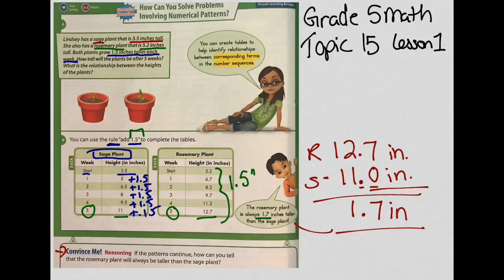For the convince me: if the pattern continues, how can you tell the rosemary plant will always be taller than the sage plant? Because the rule is adding 1 and a half inches, and the rosemary plant started out taller at 5 and 2 tenths inches compared to the sage plant at 3 and a half inches, if we keep adding that same amount, the rosemary plant will always be taller. Let's look at some more examples.